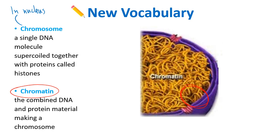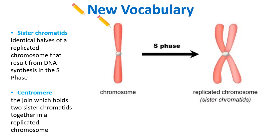Even though we often see chromosomes with that classic X structure, that only happens after the S phase. Most of the time chromosomes are just sitting as chromatin, uncoiled — not in that X shape. They just look like basically spaghetti in a bowl; they're not tightly coiled. Before the S phase, in G1, chromosomes haven't copied themselves, so they're just one molecule of DNA super-coiled up, often drawn as a simple structure.